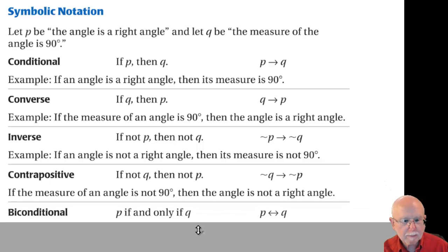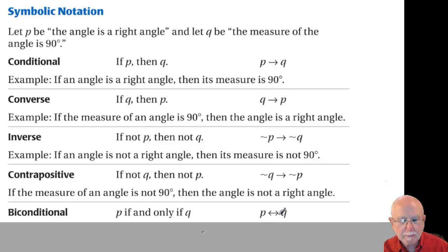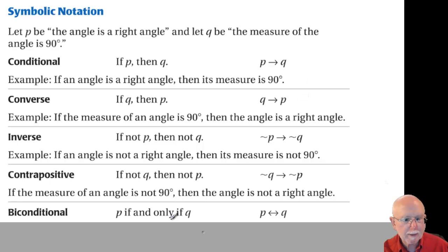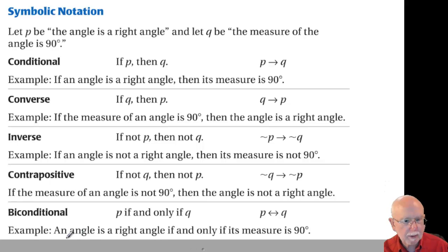And then the biconditional: I remove the 'if' from the beginning of the sentence, remove the 'then,' and put 'if and only if' in the center. I use a bidirectional implies arrow, so: P if and only if Q. I can get a biconditional only if the conditional is true and the converse is true. If one of those is false, I can't make it into a biconditional. So here: an angle is a right angle if and only if its measure is 90 degrees.